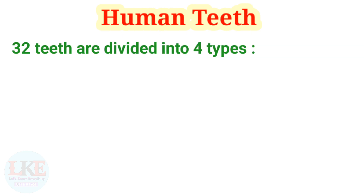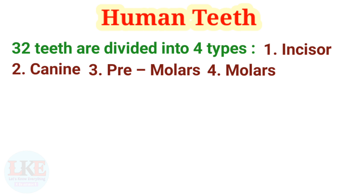These 32 teeth are divided into 4 types: incisors, canines, premolars, and molars. Each and every tooth has a particular role to perform during chewing and eventually digestion. Now let's explain these 4 types of teeth in detail.